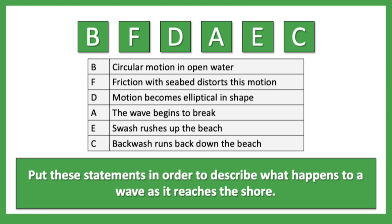So we start off with circular motion in open water. Friction with the seabed distorts this motion and the motion becomes elliptical in shape. The waves then begin to break, the swash runs up the beach, and the backwash runs back down the beach. Well done if you got those correct.